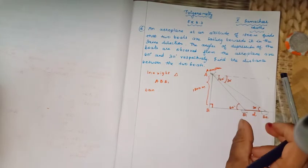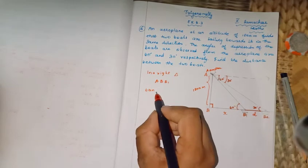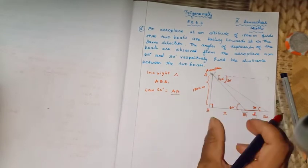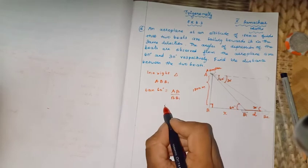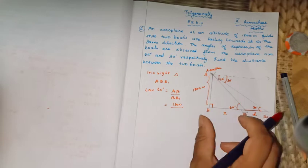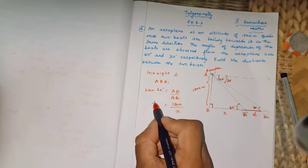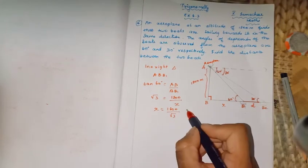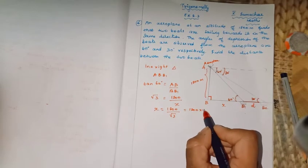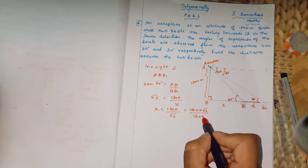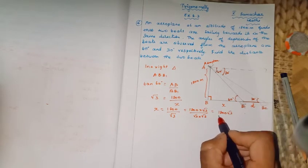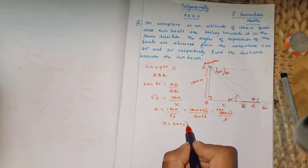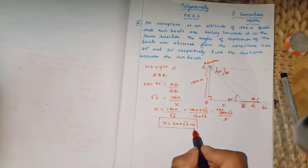In triangle ABB1, the angle at B1 is 60 degrees. So tan 60° = AB / BB1 = 1800 / BB1. Since tan 60° = √3, we get BB1 = x = 1800 / √3. Rationalizing by multiplying by √3/√3 gives 1800√3 / 3 = 600√3. So x = 600√3 meters.